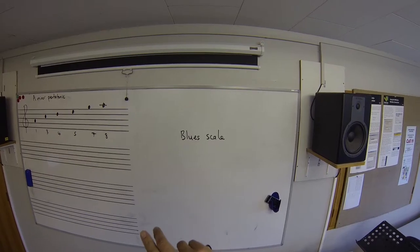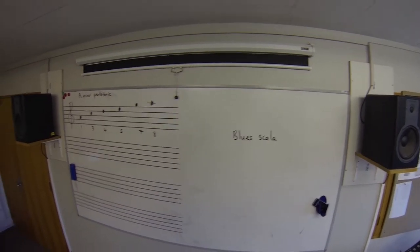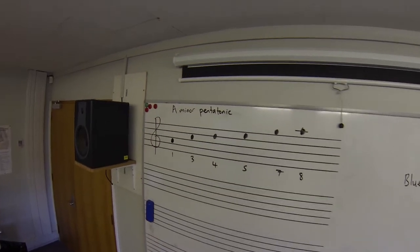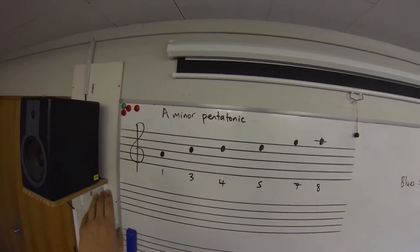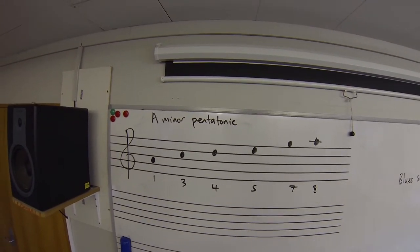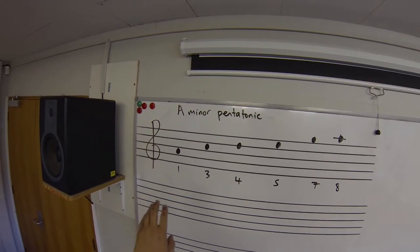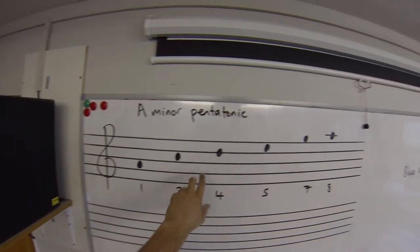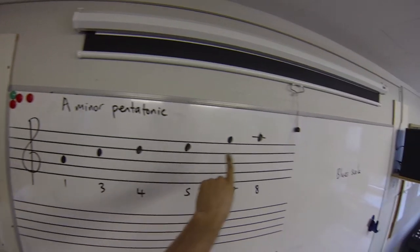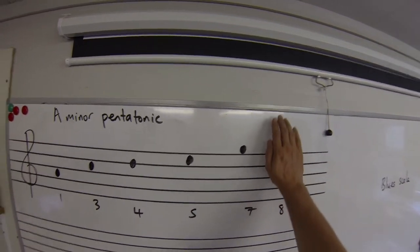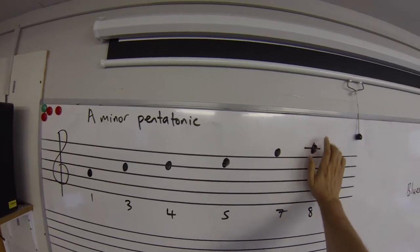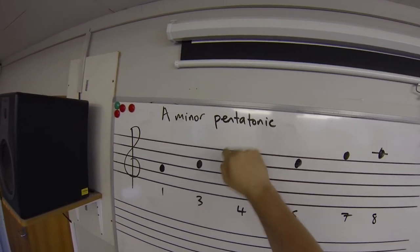If you're blue, I've got the scale for you. The blues scale is really easy to learn if you've got under your belt the minor pentatonic. So if you have a look up here, I've got the A minor pentatonic. It runs from A to A, there are five notes and then the octave, making it the pentatonic.